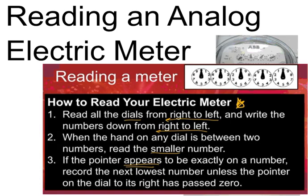On the screen are the notes from class explaining how to read an electric meter. The first step is to read all the dials from right to left and write the numbers down from right to left. When the hand on any dial is between two numbers, read the smaller number. If the pointer appears to be exactly on a number, record the next lowest number unless the pointer on the dial to its right has passed zero.